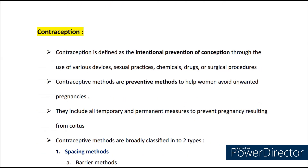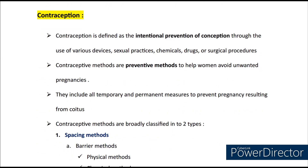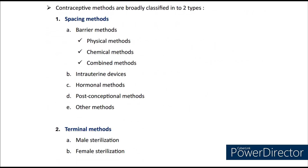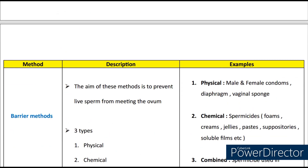Now coming to contraception, it is defined as the intentional prevention of conception through the use of various devices, sexual practices, chemicals, drugs or surgical procedures. These are basically preventive methods to help women avoid unwanted pregnancies, and they include all temporary and permanent measures to prevent pregnancy resulting from coitus. Contraceptive methods are broadly classified into two types: spacing methods and terminal methods. We will look into each of these methods very briefly with some examples.